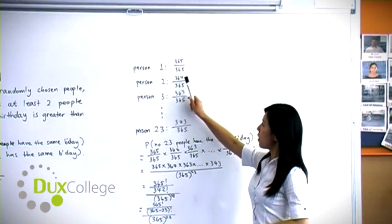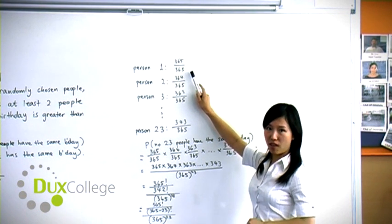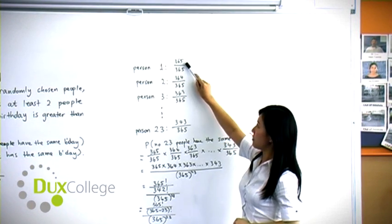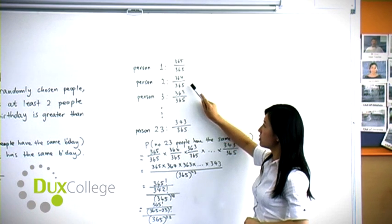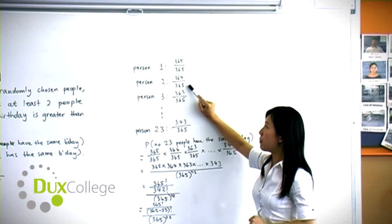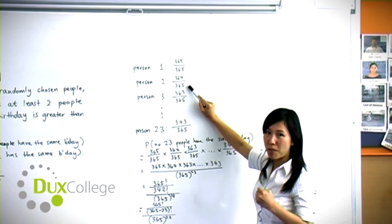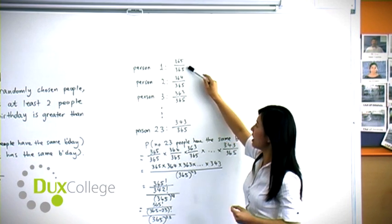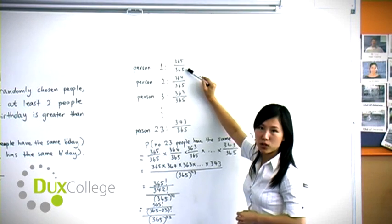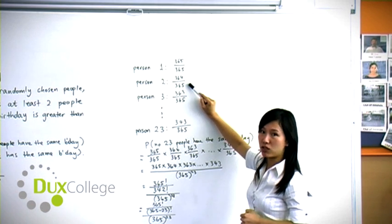Now person 1's birthday can land on any day out of the 365 days, so it equals 365 out of 365. Person 2's birthday can land on 364 days out of 365, apart from that one particular day, which is person 1's birthday. So that's why it's 364 out of 365.